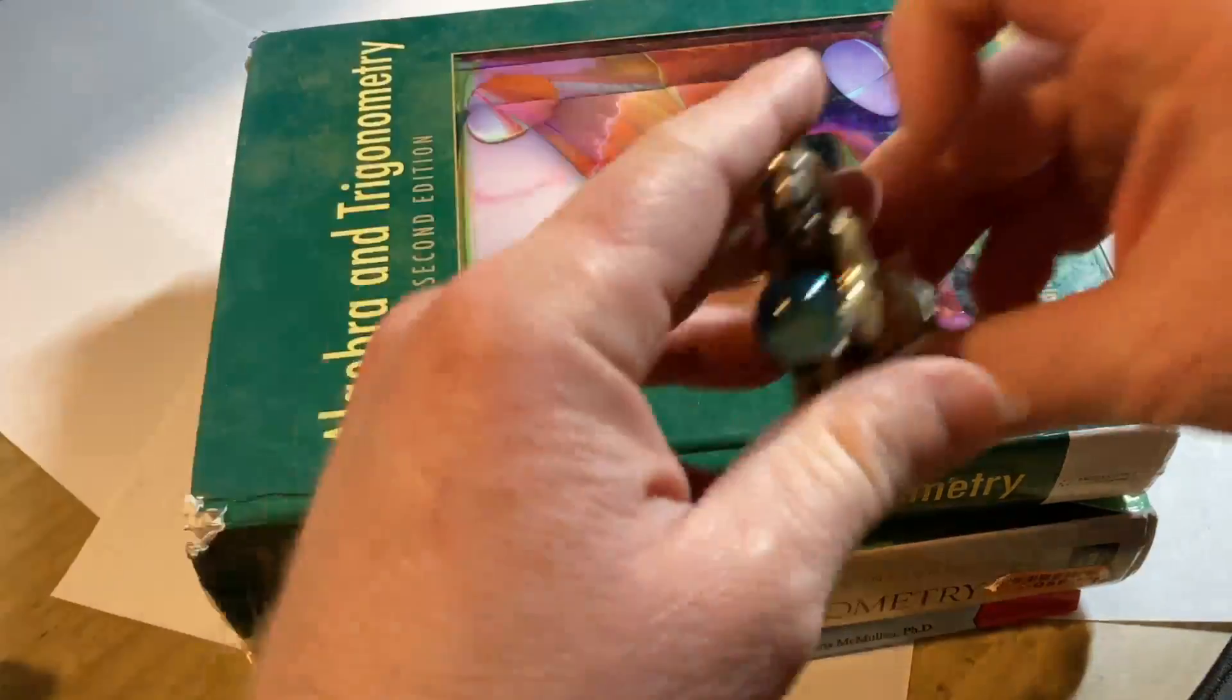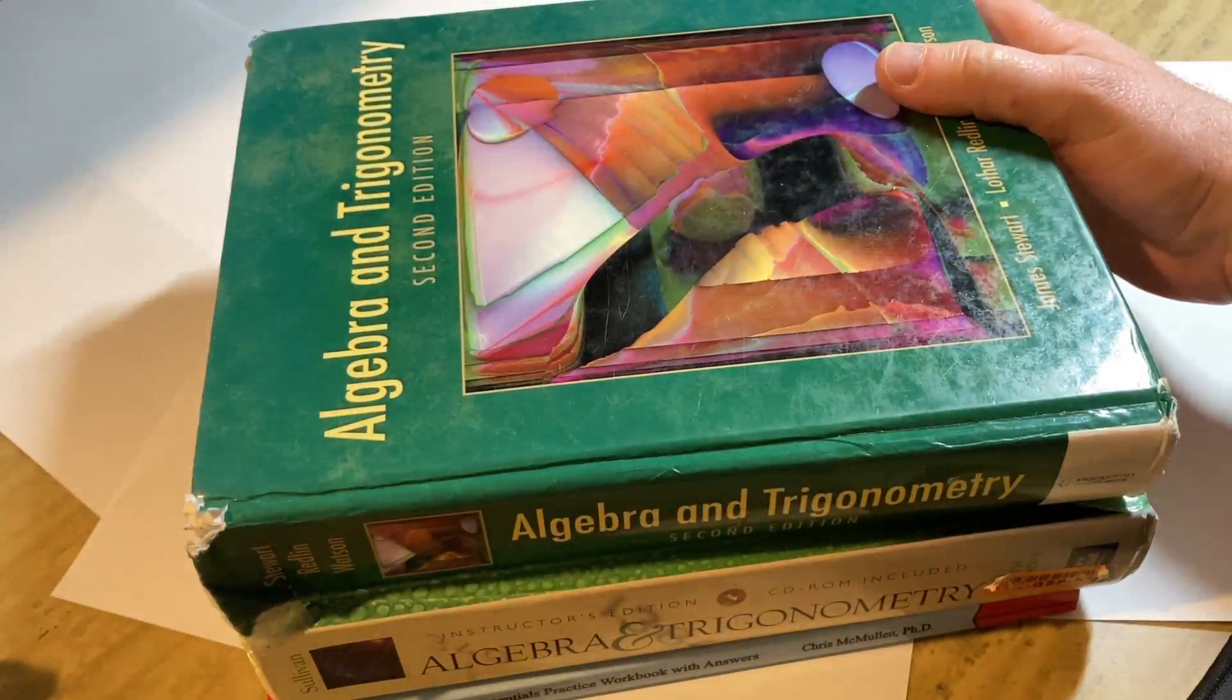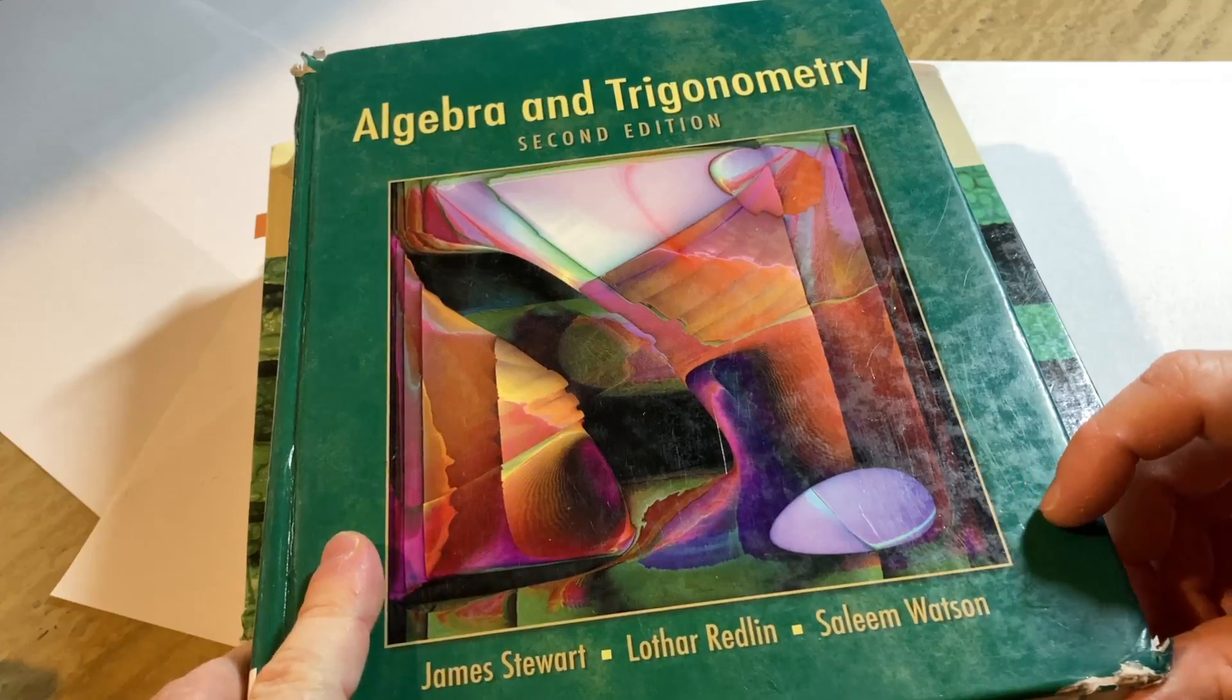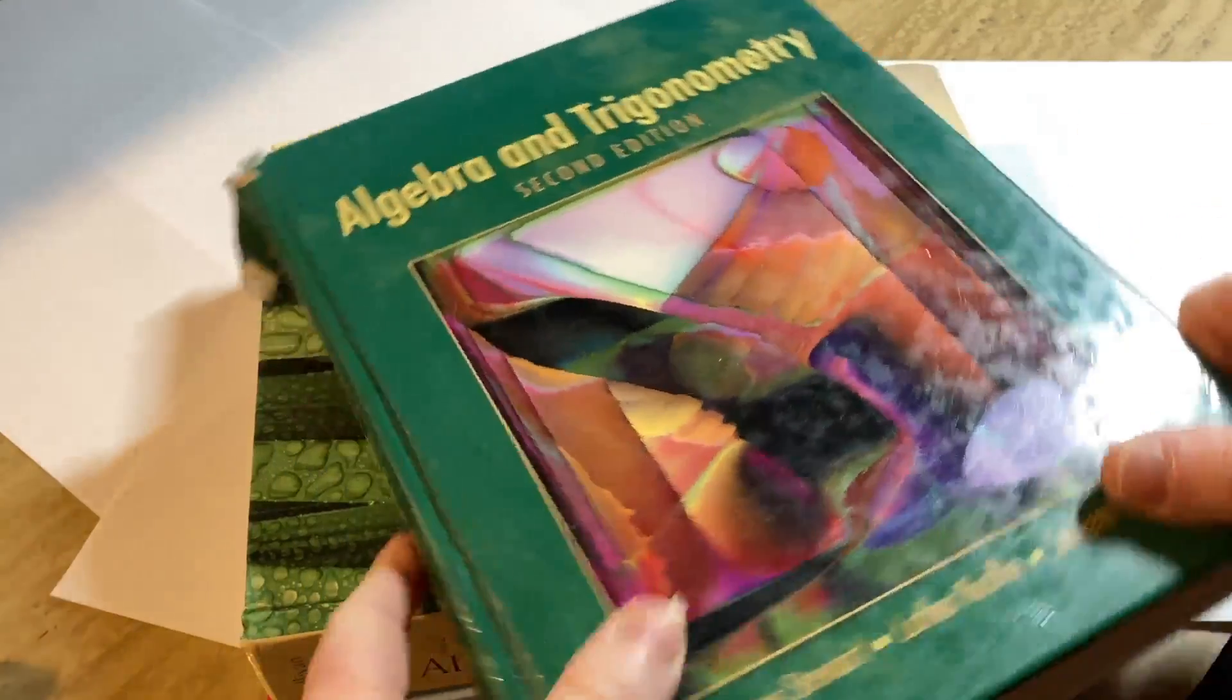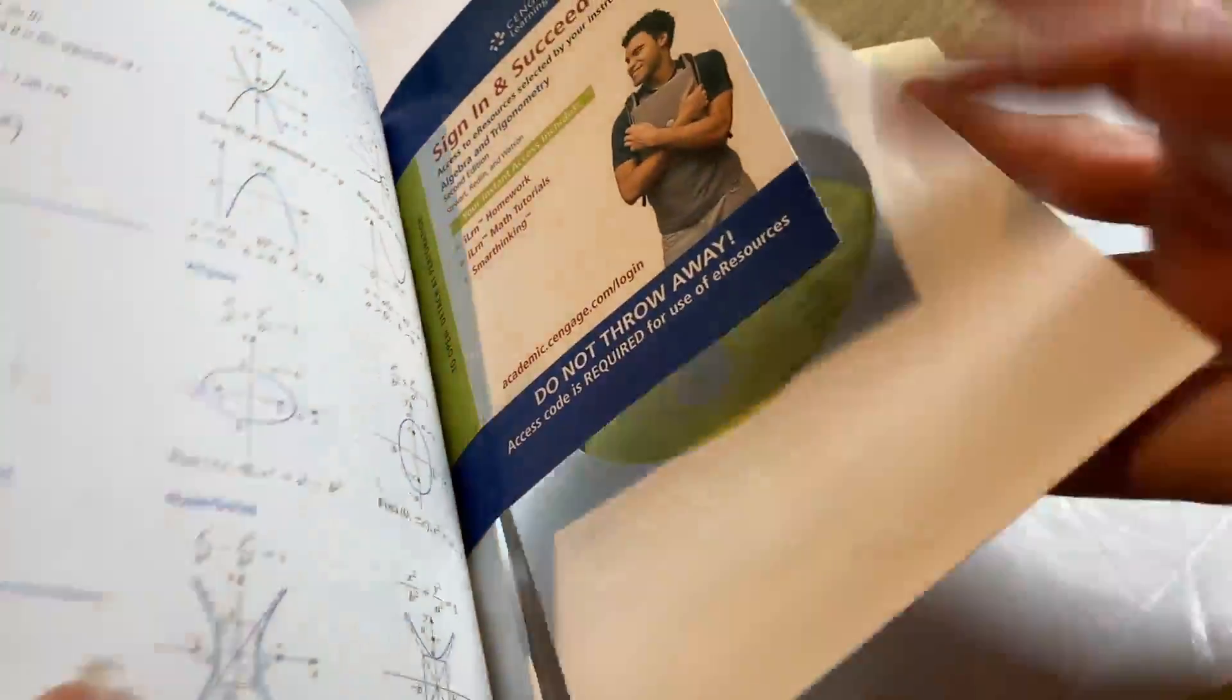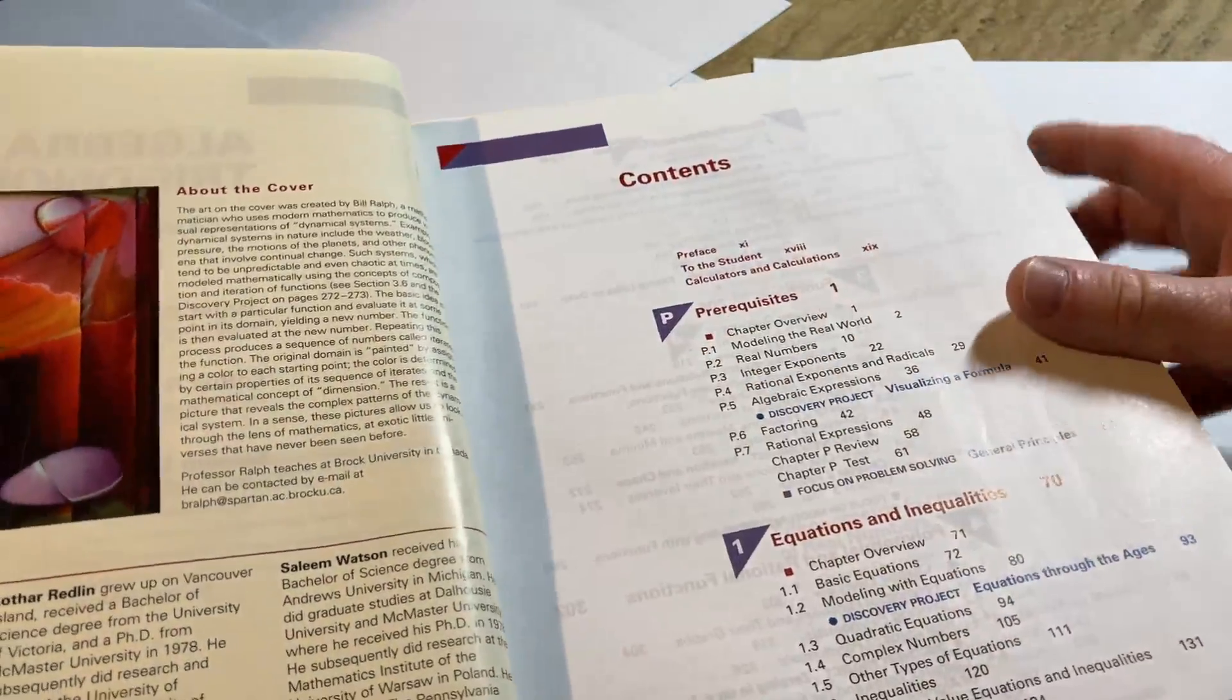Let's start with the book here on top, which is awesome. It's called Algebra and Trigonometry by James Stewart, Lothar Redlin, and Salim Watson. This is a used copy. I'm pretty sure there's a newer edition. And this book has everything you need to learn trigonometry.